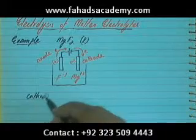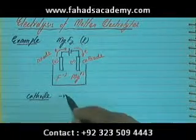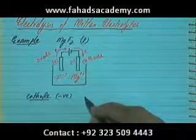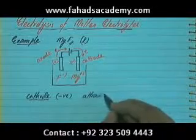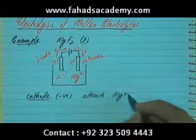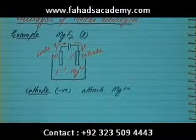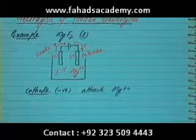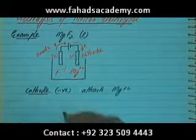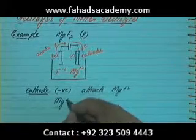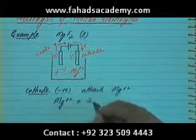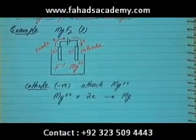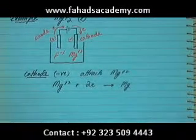The cathode, which is the negative terminal, attracts the positive ion — in this case Mg²⁺. Mg²⁺ is deficient, having had two electrons removed. The battery provides those electrons, so Mg²⁺ is attracted to the cathode and gains two electrons, forming neutral magnesium metal that comes out of the solution.